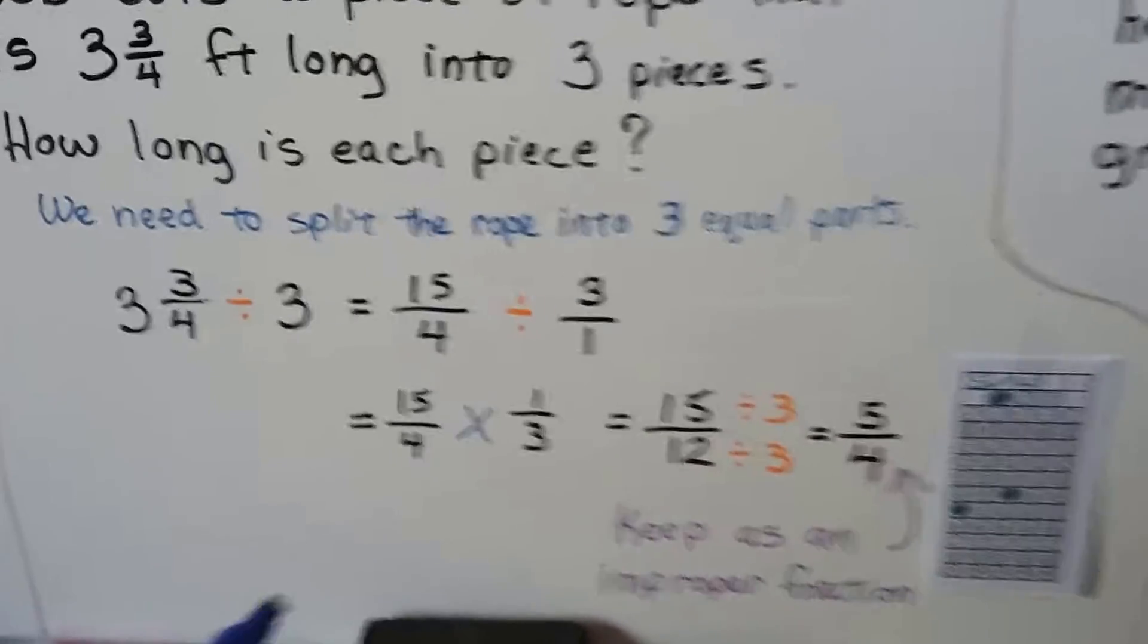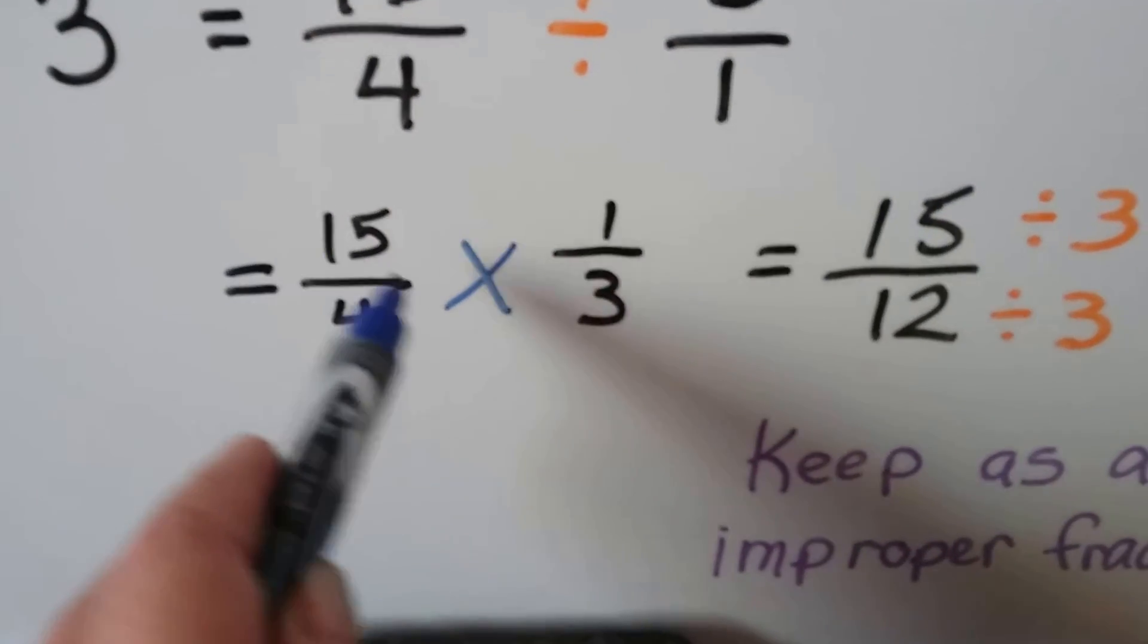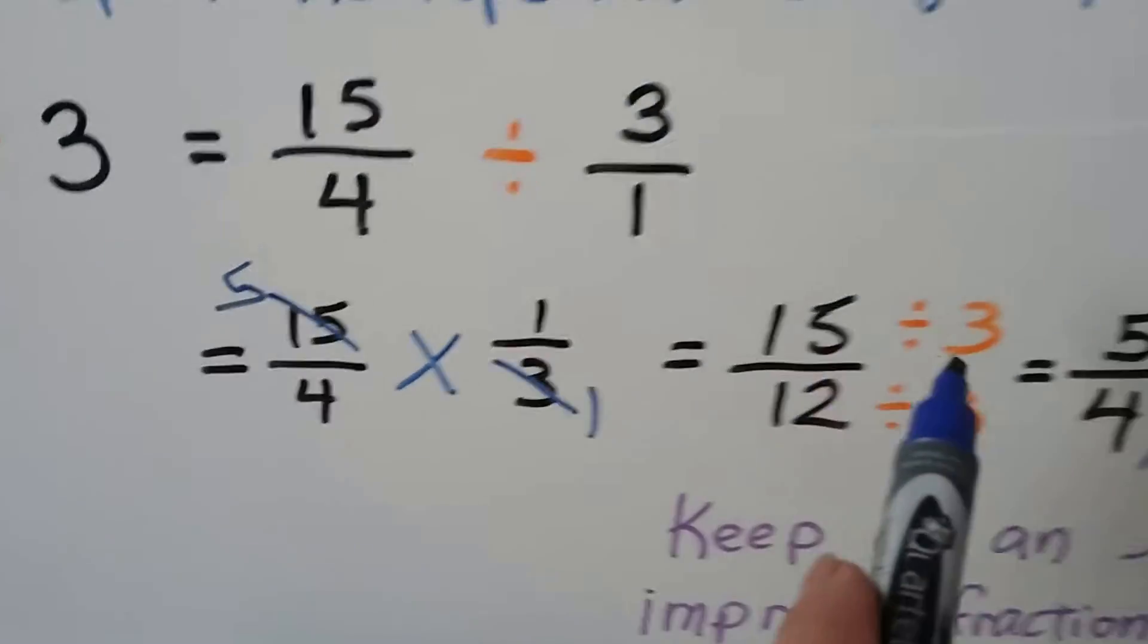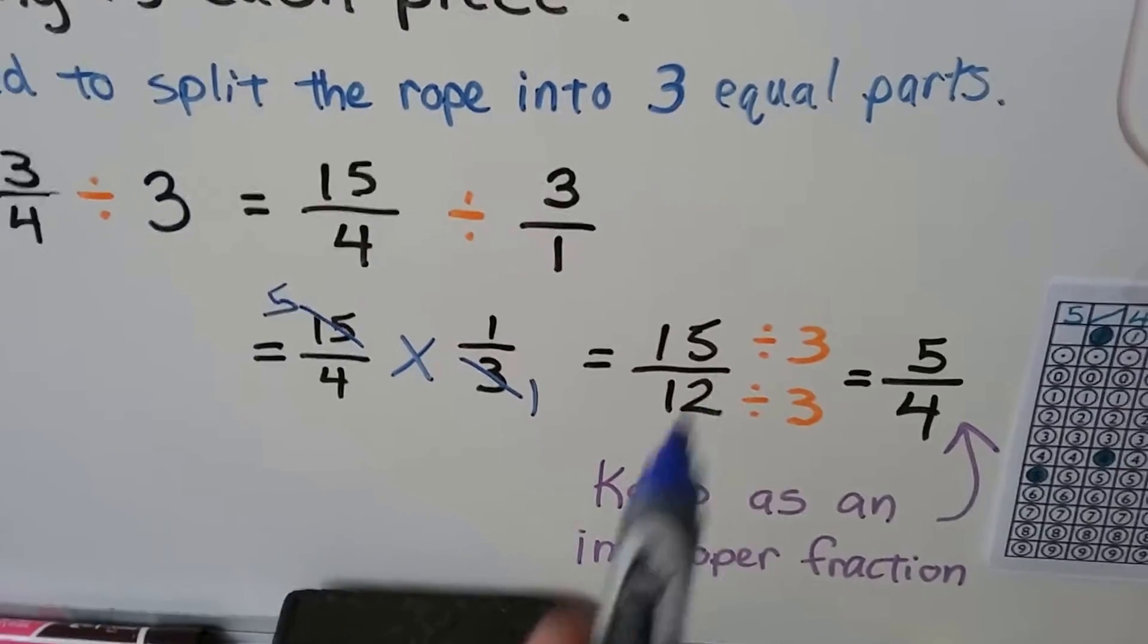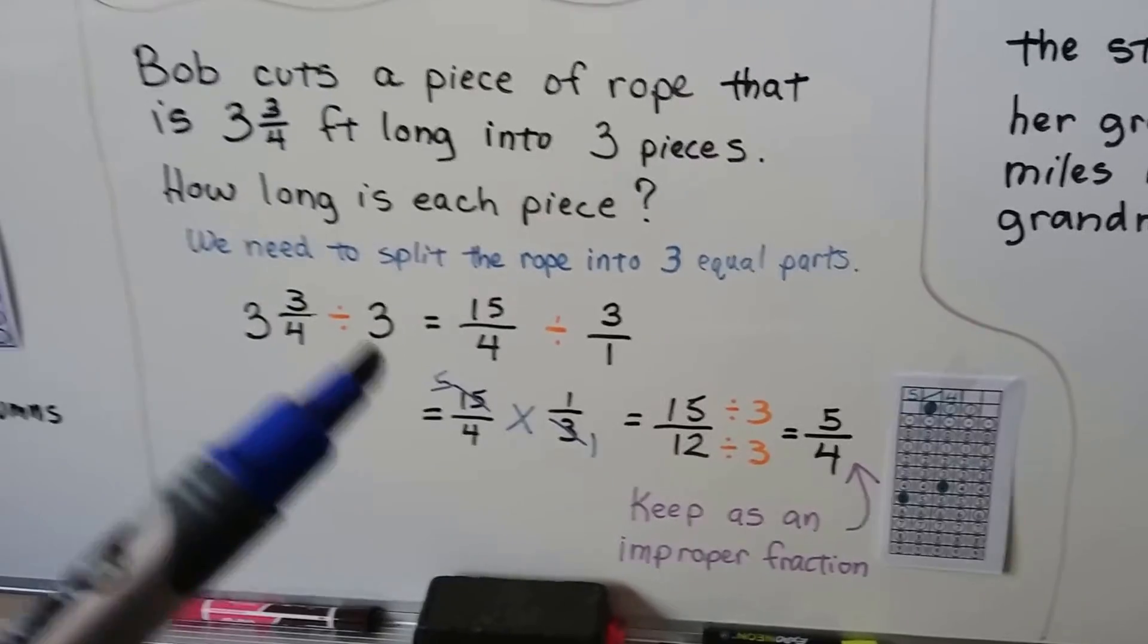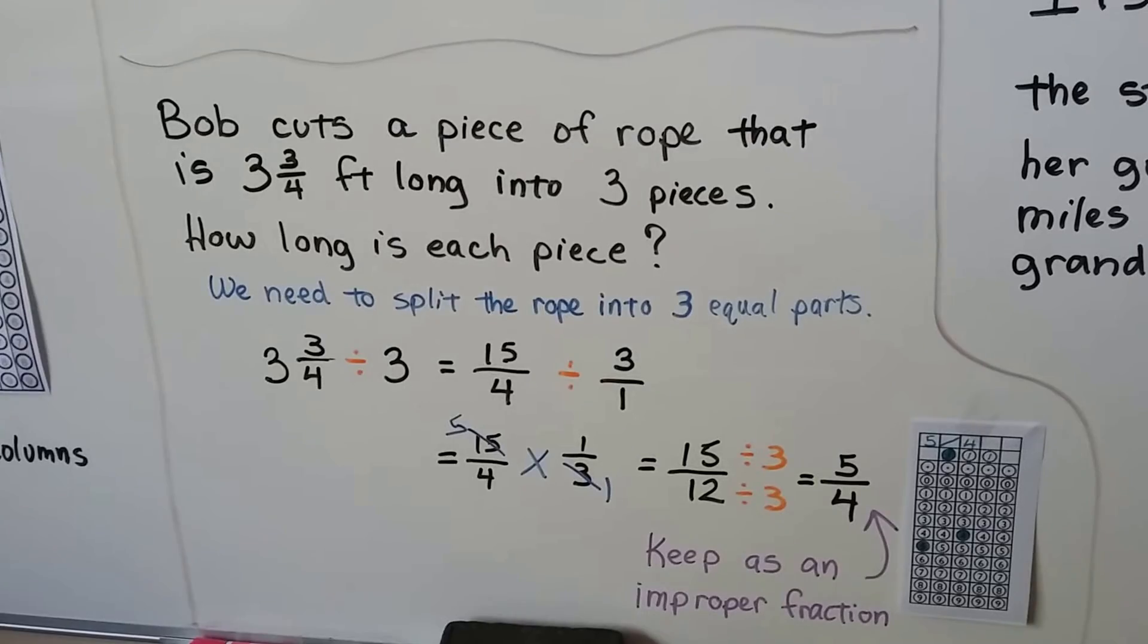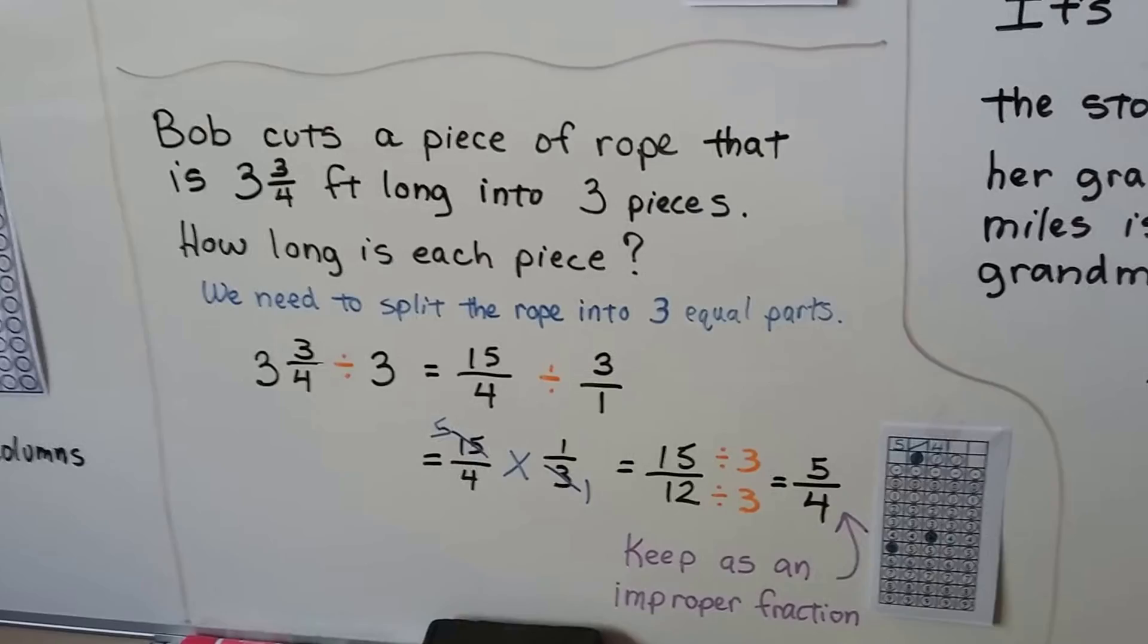It might have been easier if we did cross-canceling here. We have a 3 and a 15. We could have done one 3 here and five 3s here, and that would have given us 5 times 1 is 5, and 4 times 1 is 4, and we could have gone quicker without having to reduce this. So cross-canceling can help you. If you've missed that, you need to look in the description of this video or go into the GED Math playlist and look for the lesson 7 videos where we talked about this.